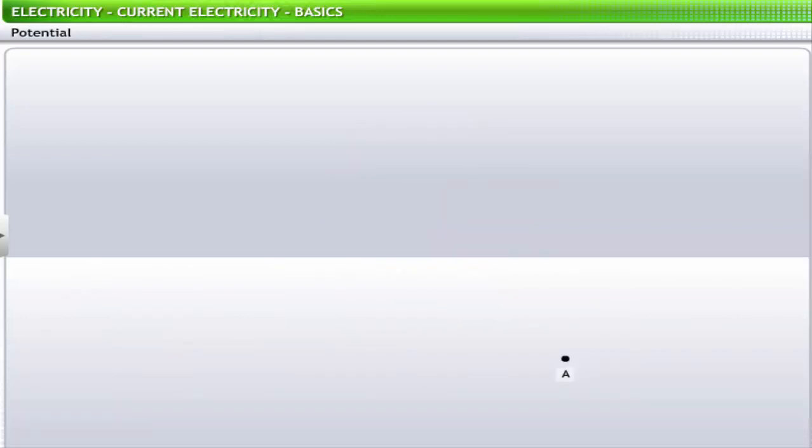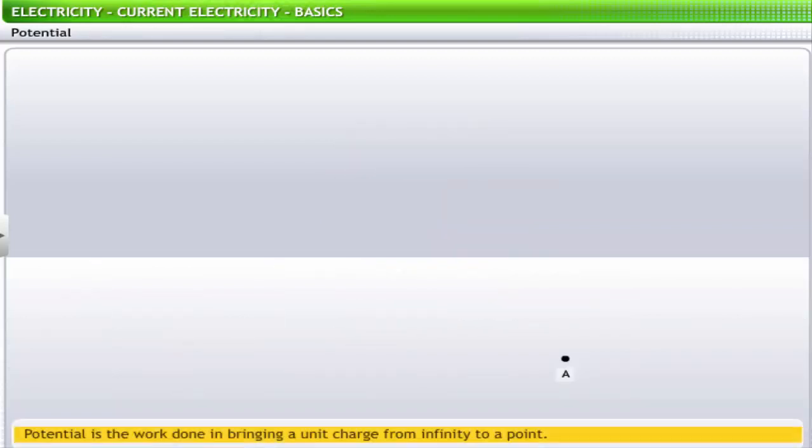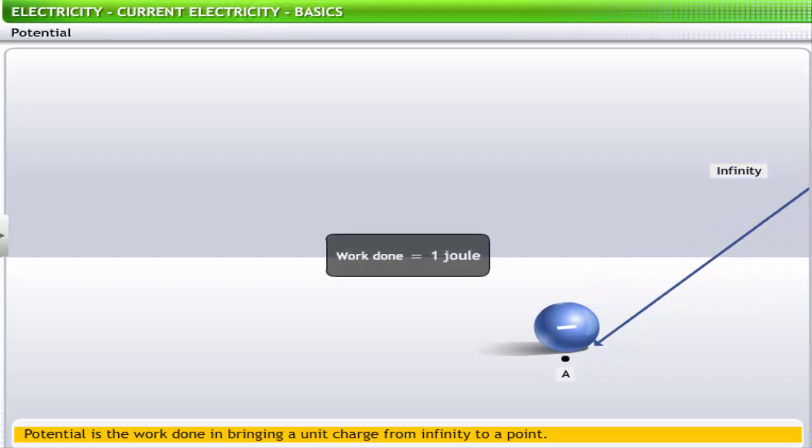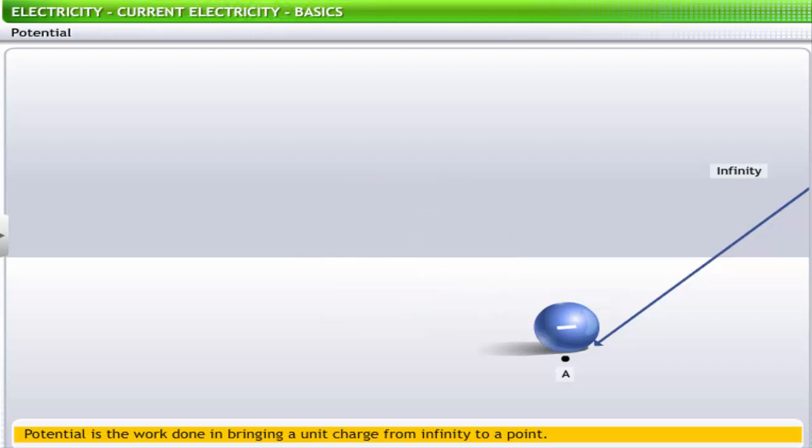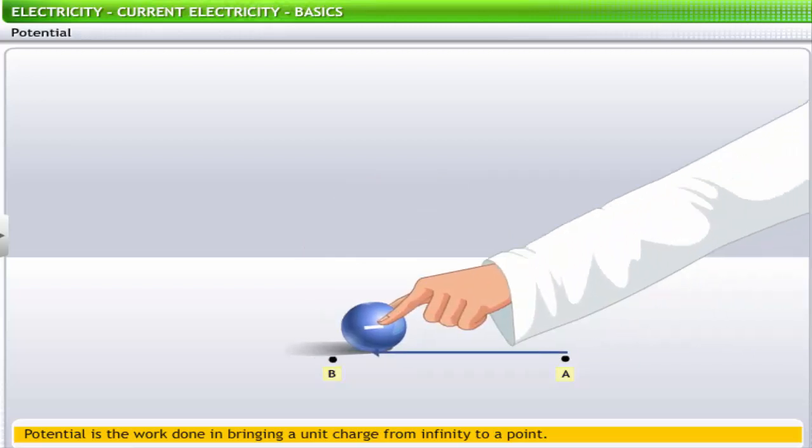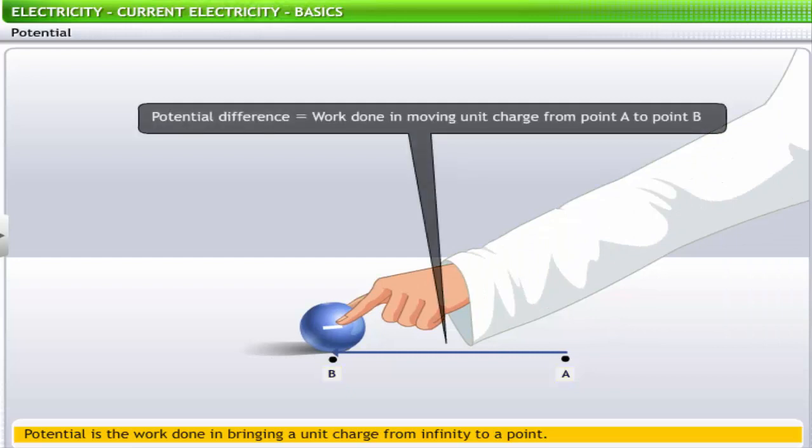As against potential difference, potential is the work done in bringing a unit charge from infinity to a point. Thus, if the work done to bring a unit charge from infinity to a point is 1 joule, then the potential at that point is 1 volt. In the given example, potential difference between points A and B is the difference in the work done in moving a unit charge from point A to B.